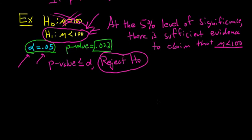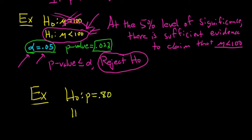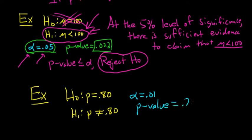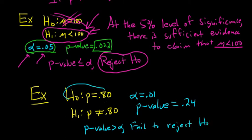Let's do another example. Say we have a null hypothesis that p, the population proportion, is equal to 0.80, and the alternative hypothesis is that p is not equal to 0.80. Let's say our alpha this time is 0.01 and our p-value is 0.24. In this case, the p-value is bigger than alpha, so we fail to reject the null hypothesis.